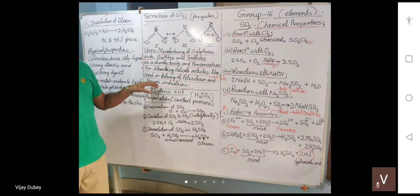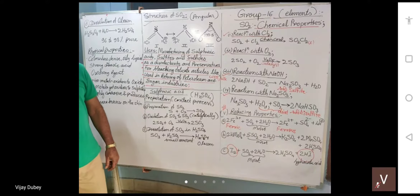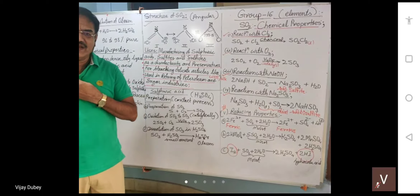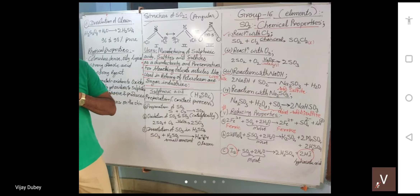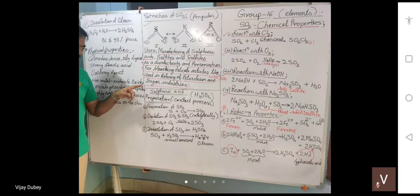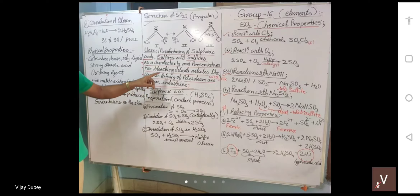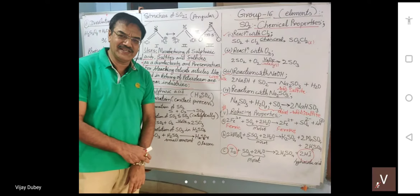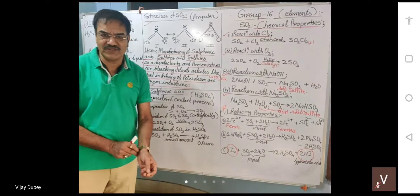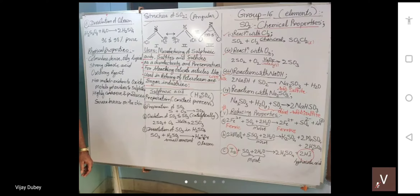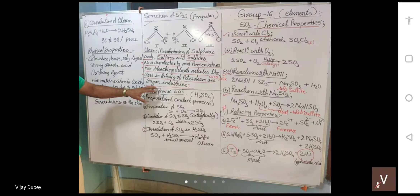India has become a hub of diabetic and heart patients. Refined sugar is one of the causes. You should avoid refined sugar and can use jaggery instead. Coming back to sulfur dioxide — yesterday we studied preparation and physical properties, and today we covered five chemical reactions and the important reducing property.